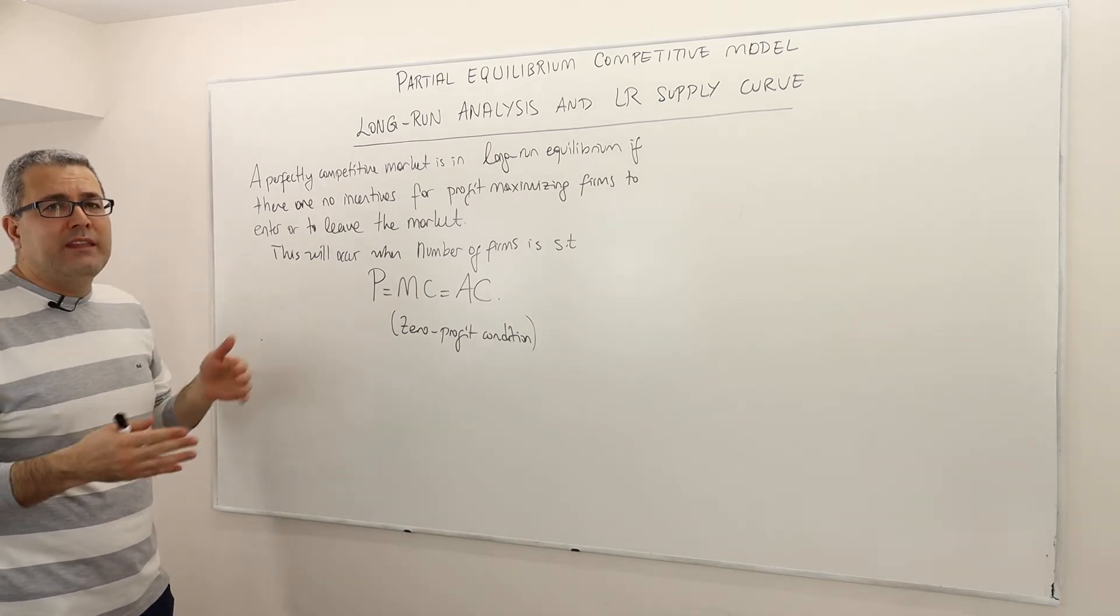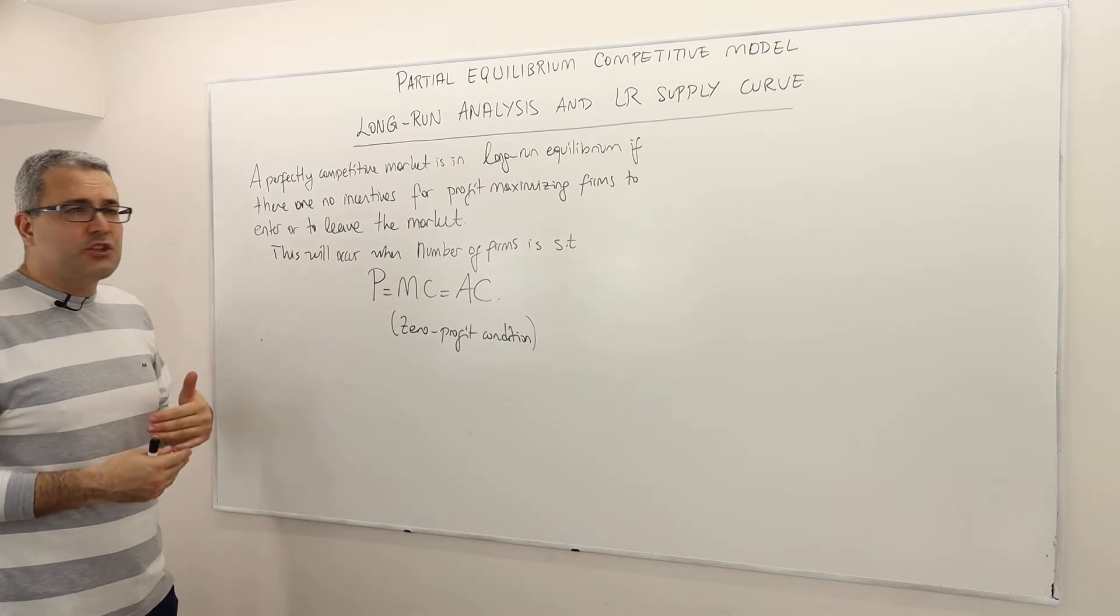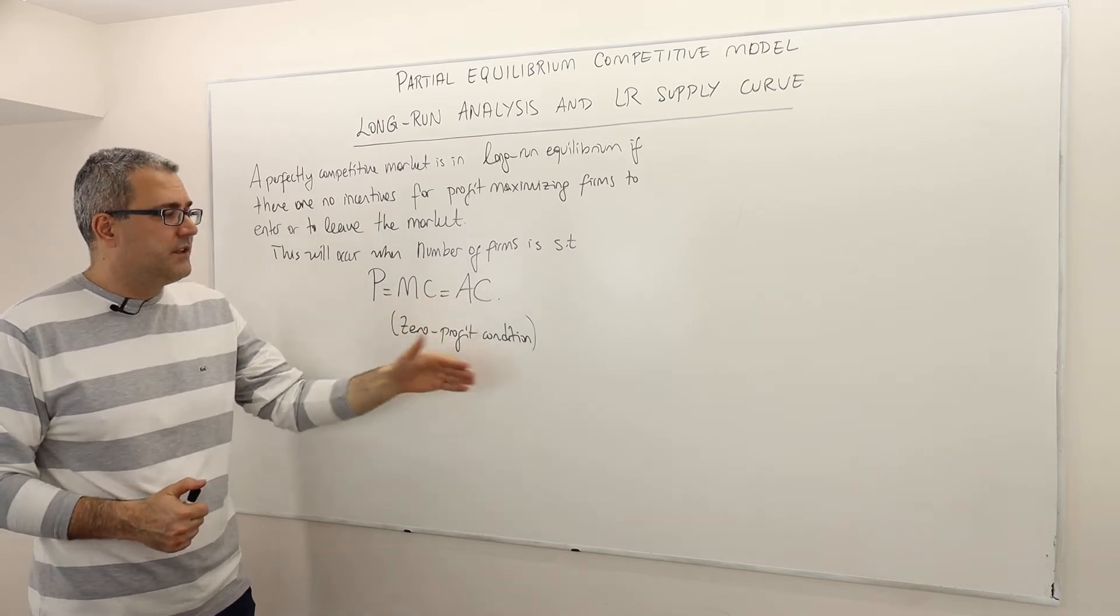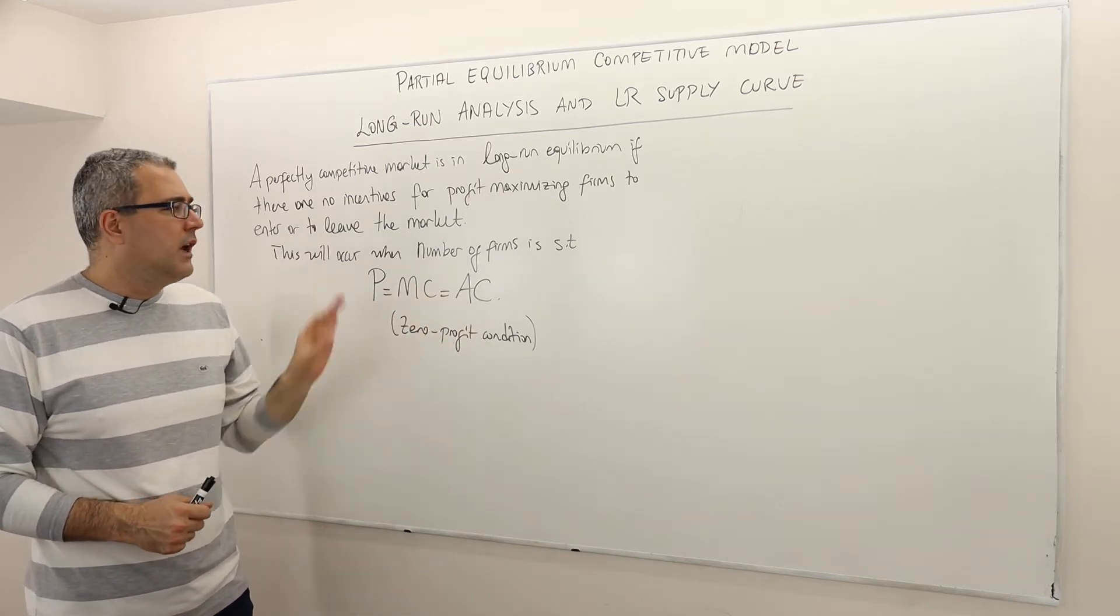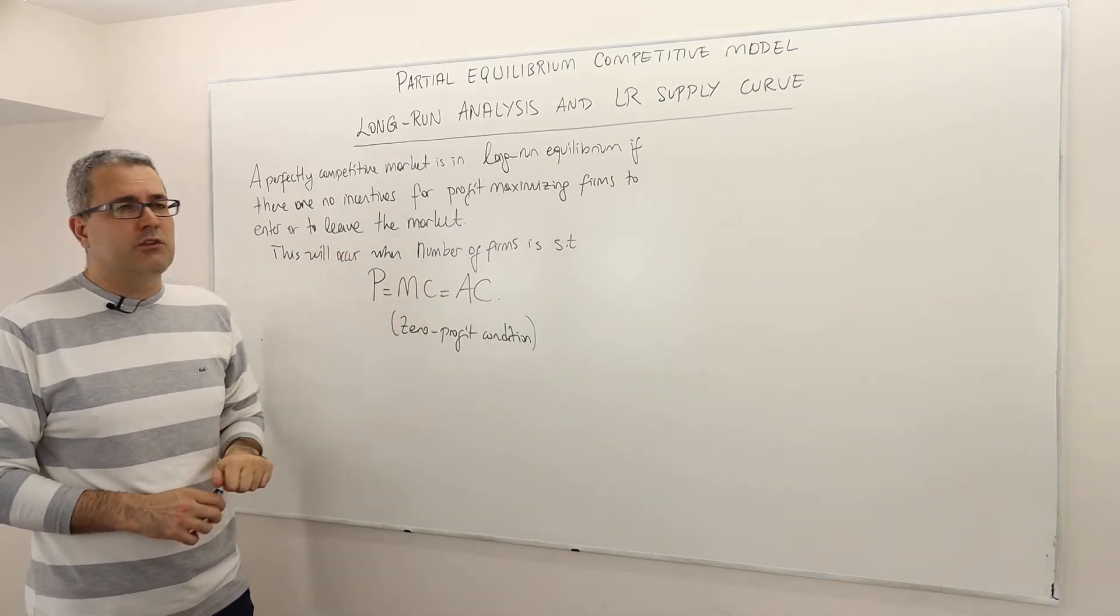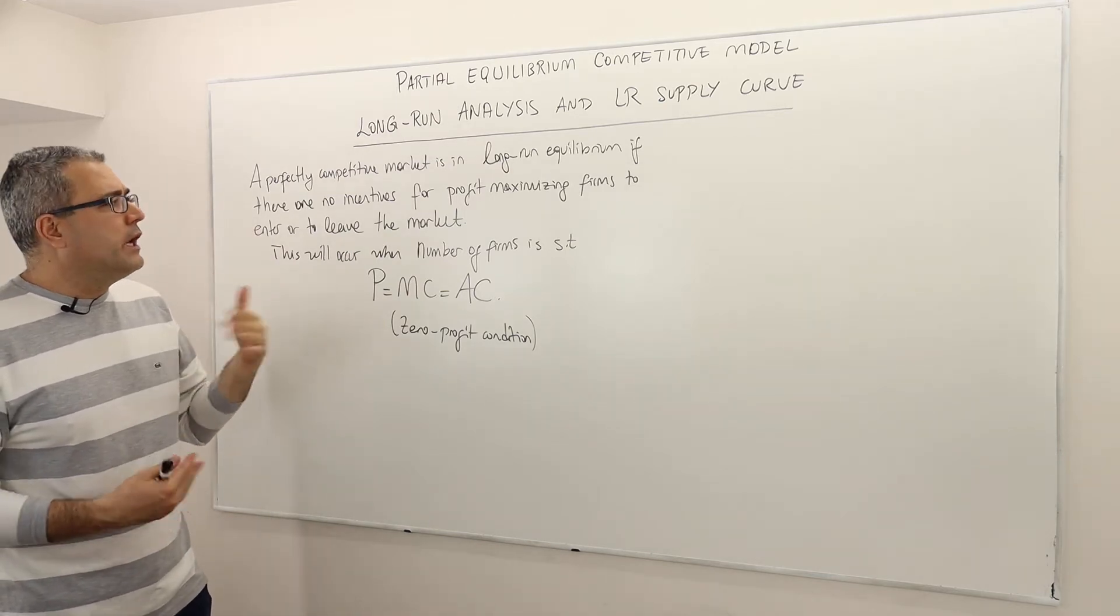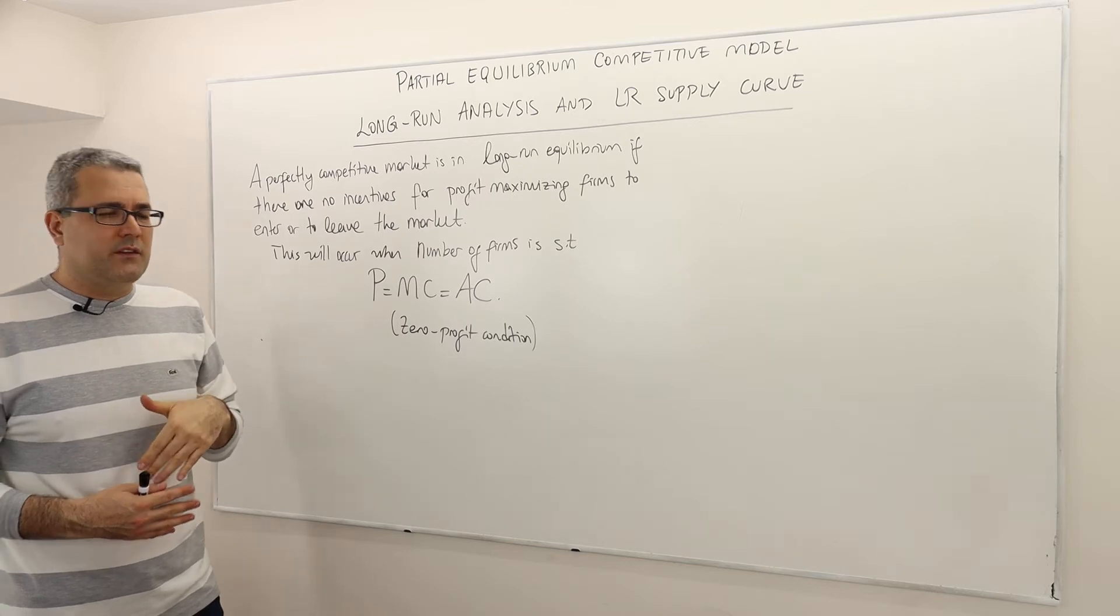This will occur when the number of firms is such that price is equal to marginal cost, which is equal to average cost, or this is the zero profit condition. I'm going to explain why this is a zero profit condition, but let's first talk about what we mean by no incentives for firms to enter or exit.